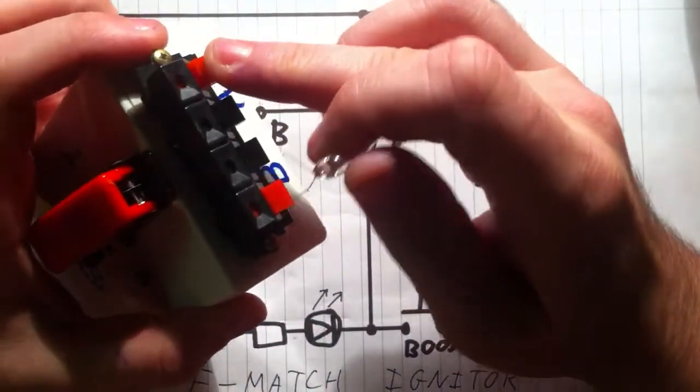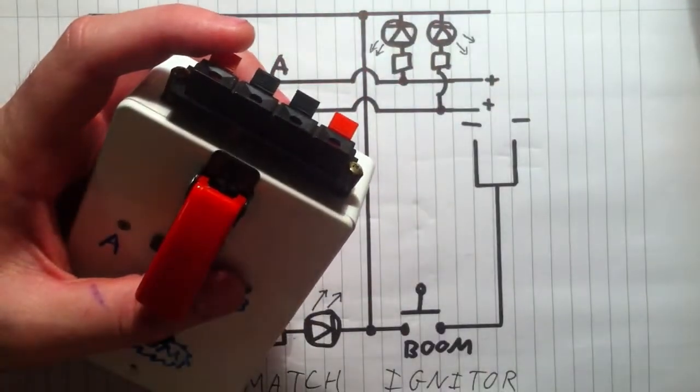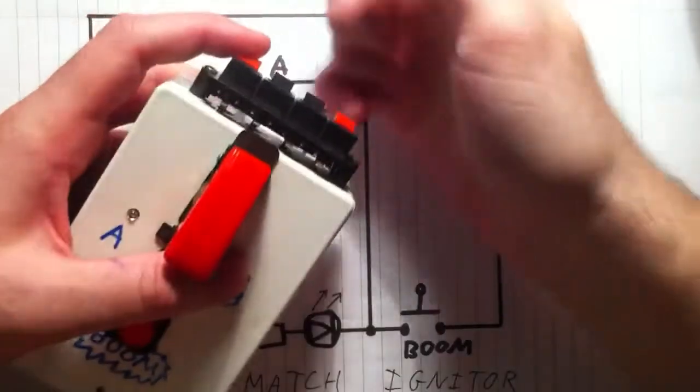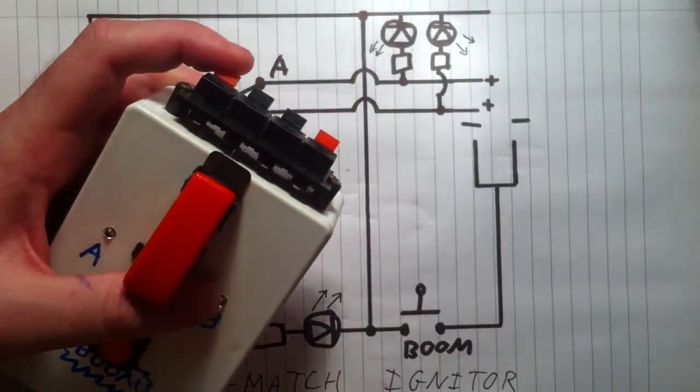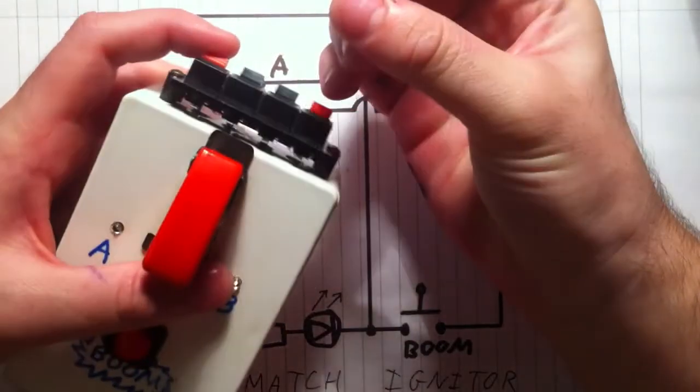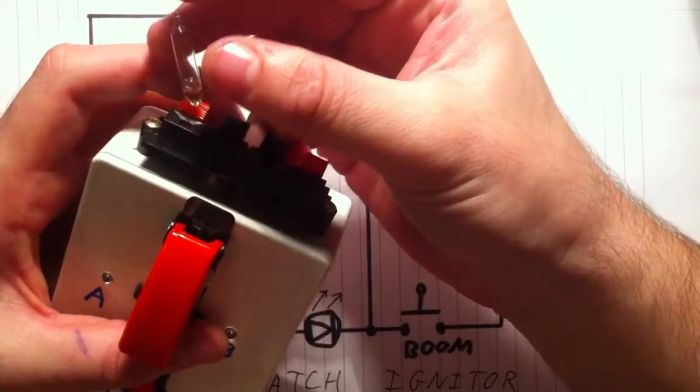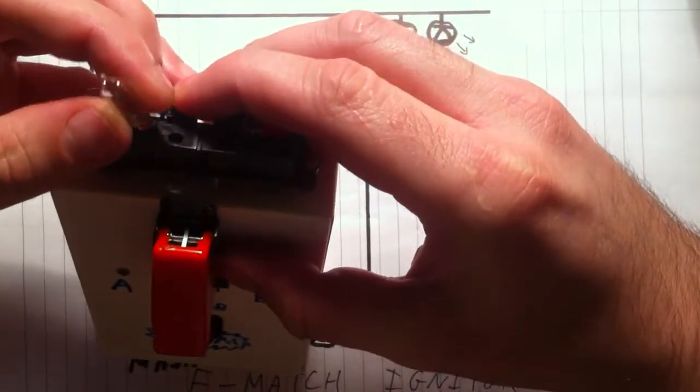These are speaker jacks for old school speakers. You may have seen them. There's no polarity on these so doesn't matter which way you put Christmas tree light in.